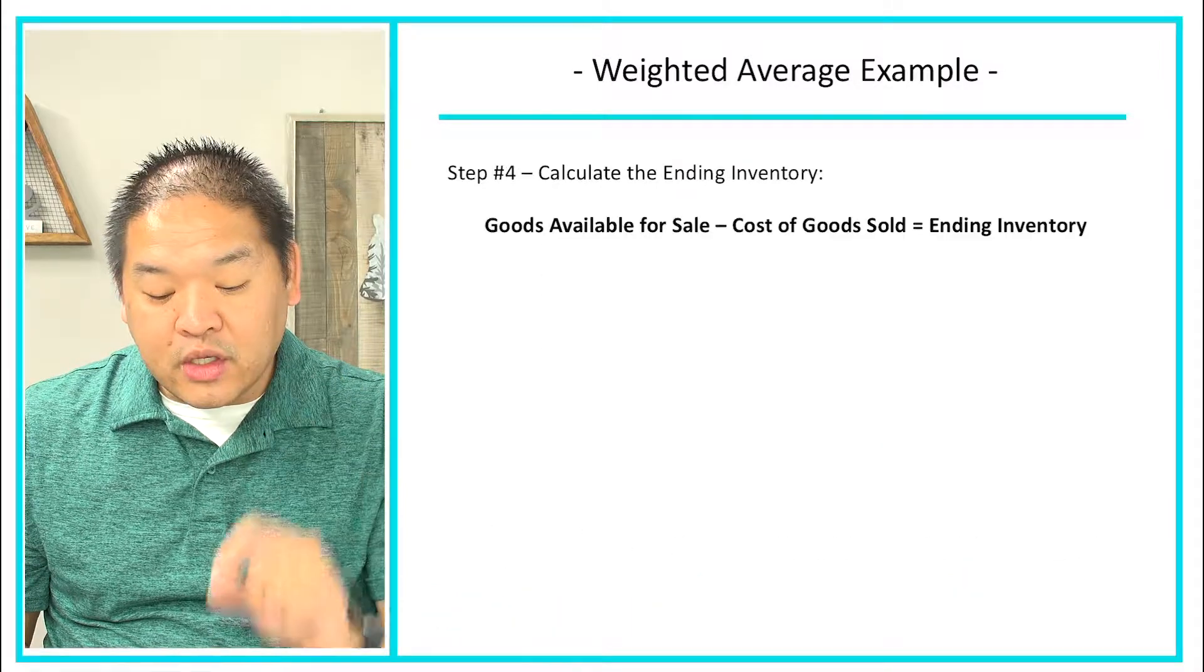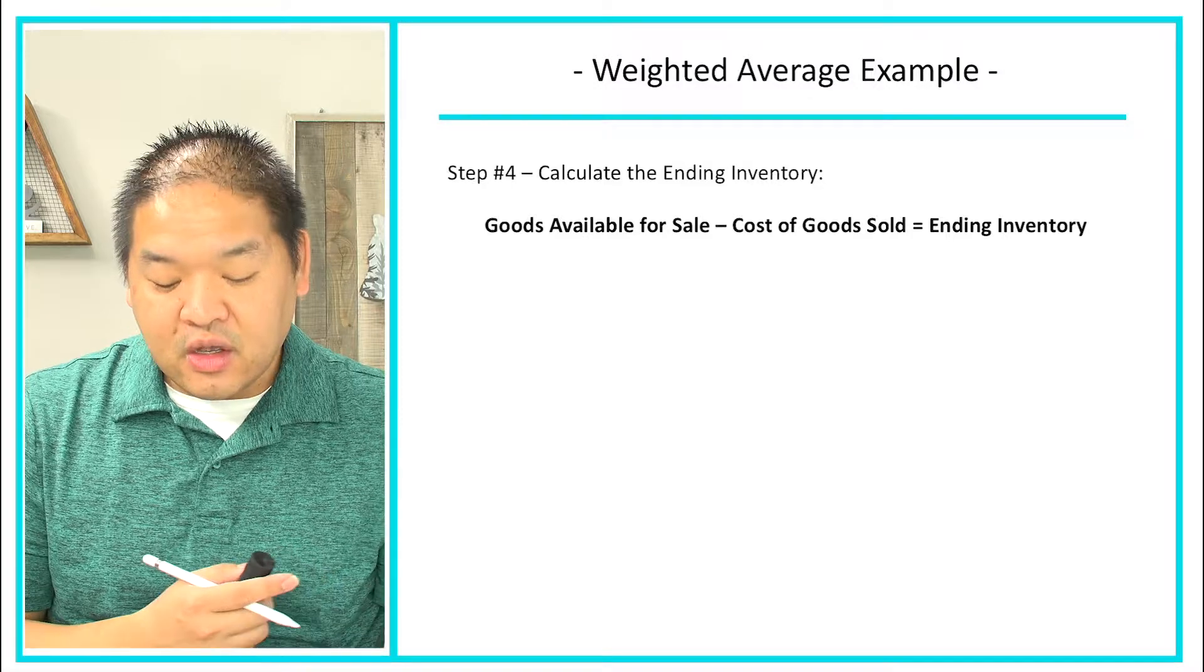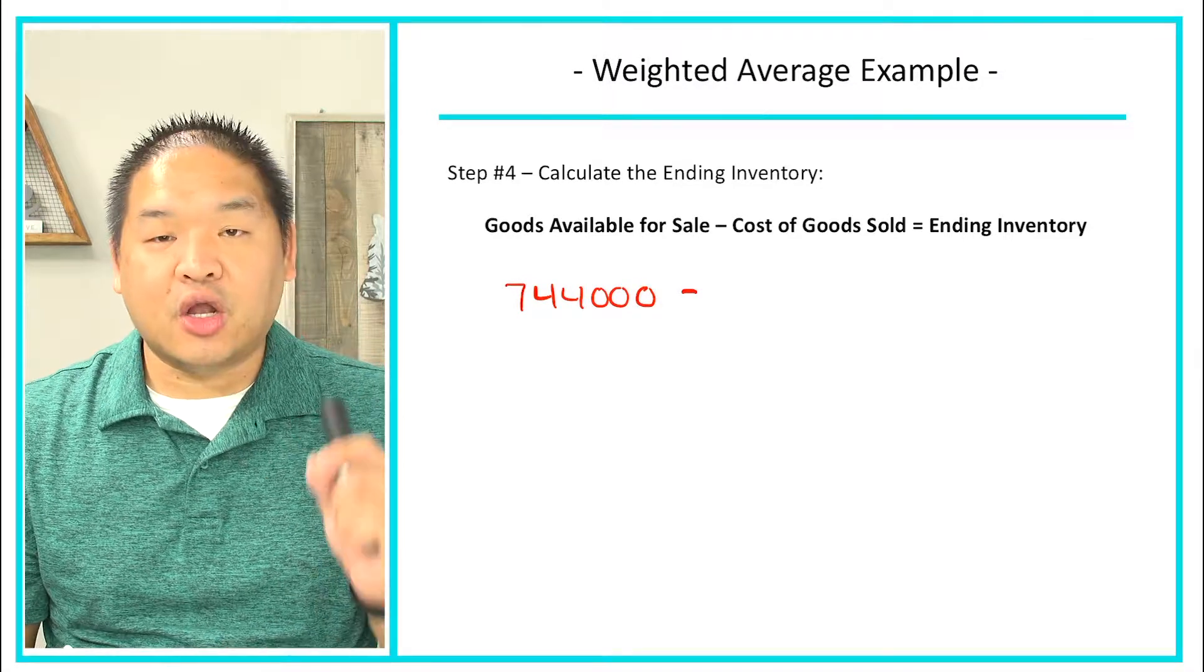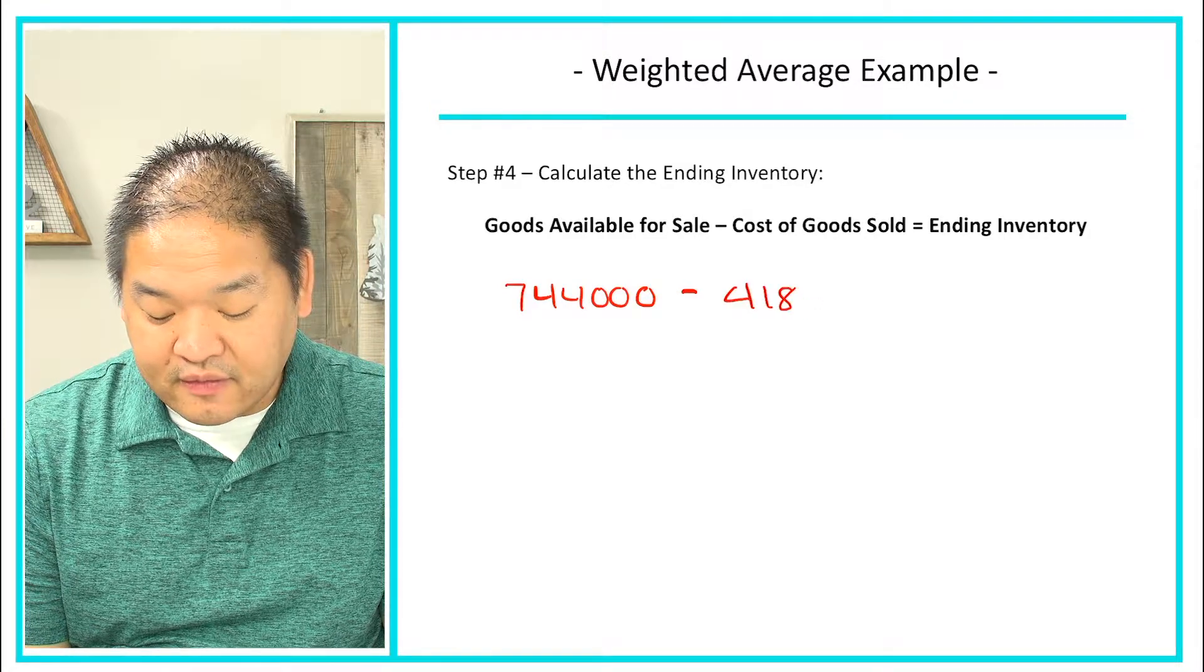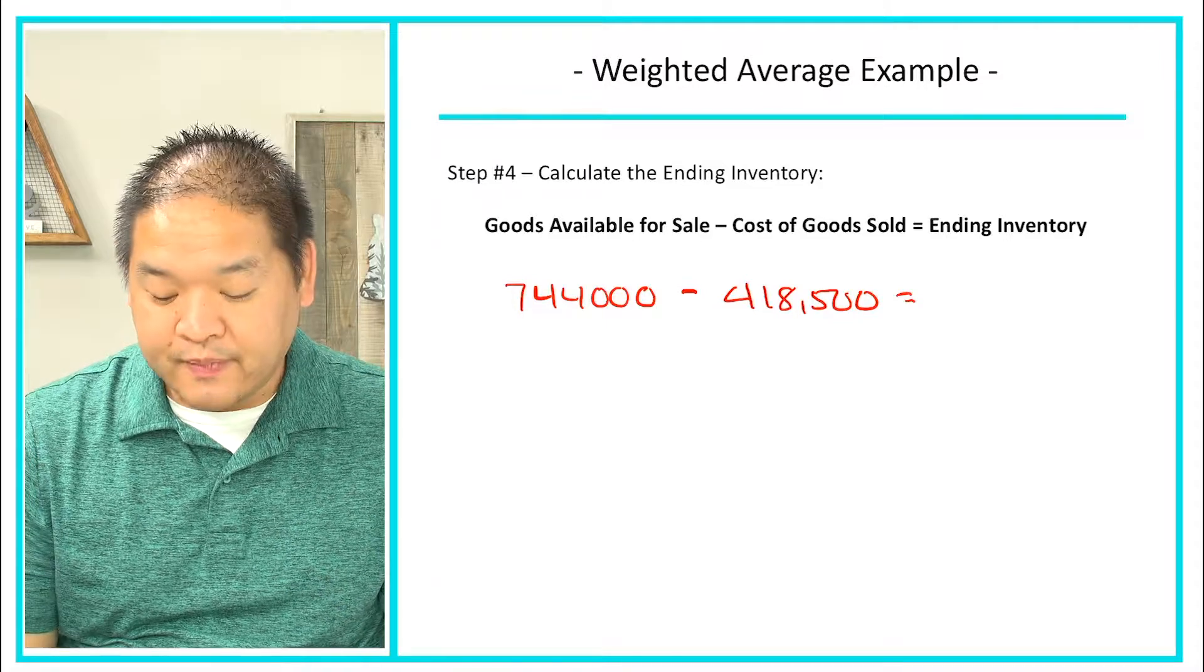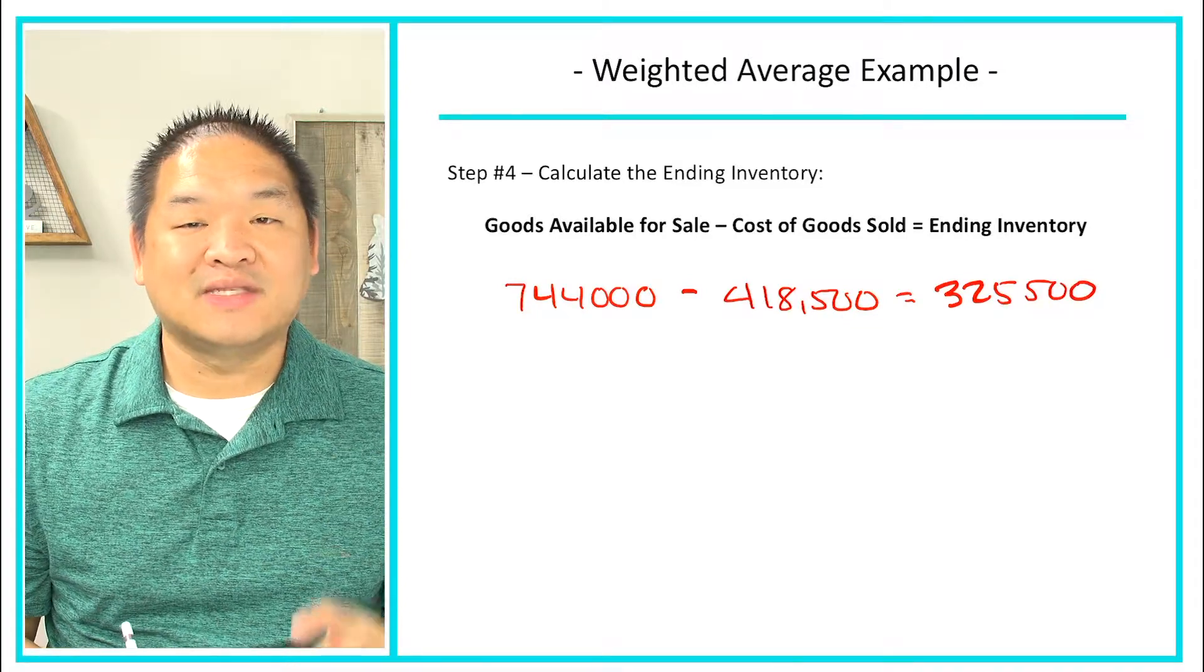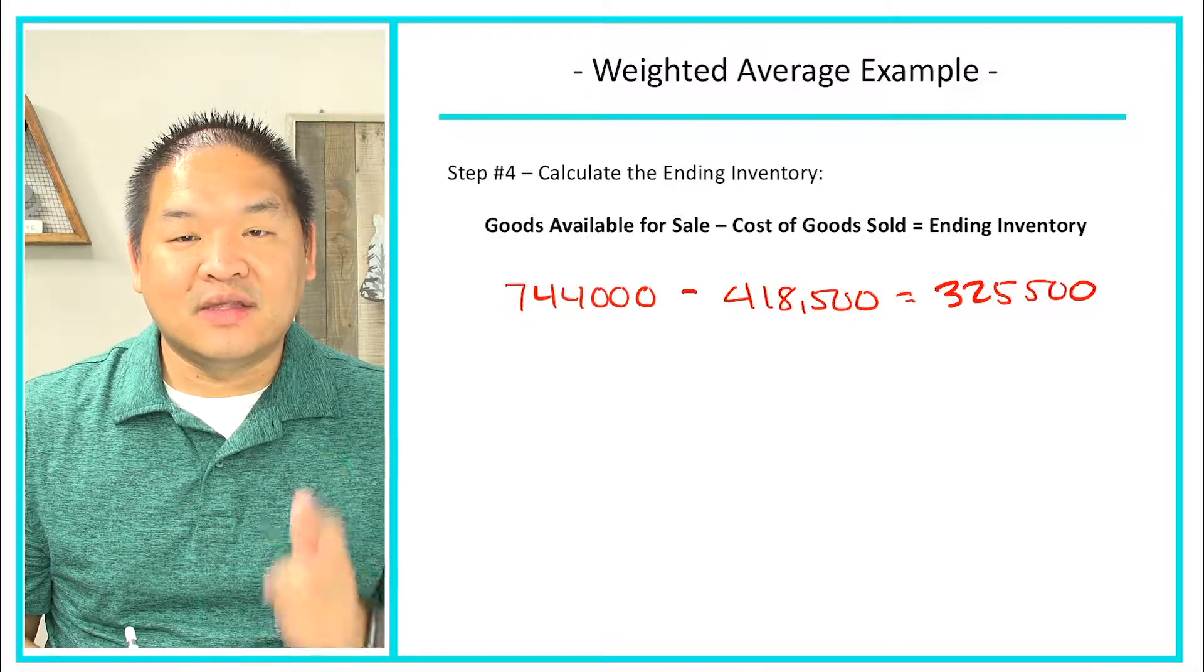So to calculate the ending inventory we know that we can use this equation that we've used all along in all of these videos. We can take the goods available for sale cost-wise, which was $744,000, and subtract it from our cost of goods sold that we just calculated, $418,500, and that's going to give me an ending inventory of $325,500. So our ending inventory is $325,500, and that gives us our third answer for the questions that are asked in this problem.